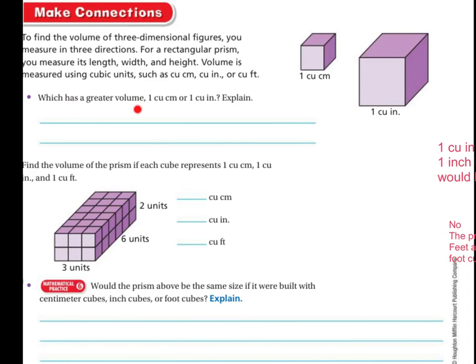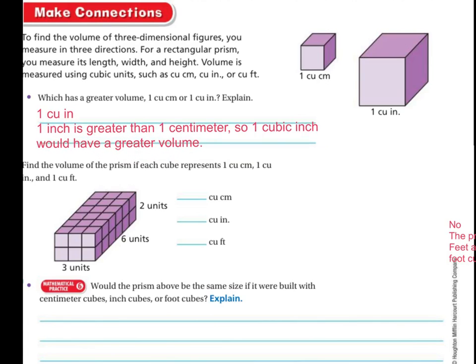Which has a greater volume, one cubic centimeter or one cubic inch? Well, one cubic inch does. And the reason is, one inch is greater than one centimeter. So one cubic inch would have to have a greater volume. To find the volume of a prism, if each cube represents one cubic centimeter, one cubic inch, and one cubic foot.